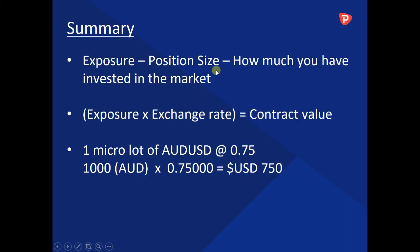To summarize: exposure or position size tells you how much you have invested in a market. Exposure times exchange rate gives you your contract value. As an example, we used 1 micro lot of Aussie against the US dollar trading at 75 cents. Remember: exposure times exchange rate gives you your contract value.